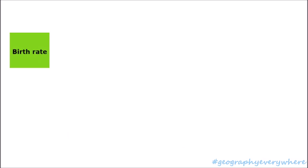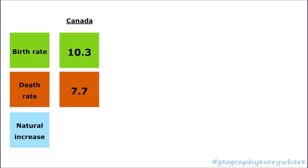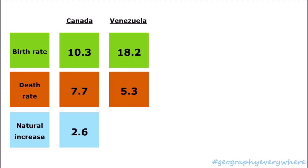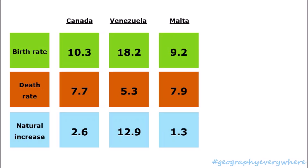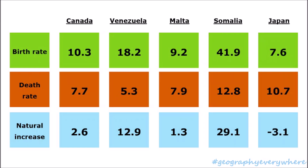Let's look at the natural increase of the countries we mentioned before — the birth rate minus the death rate equals the natural increase. Canada has a natural increase of 2.6. Venezuela has a natural increase of 12.9. Malta, which we just calculated, has 1.3. Somalia's natural increase is 29.1, and Japan's is minus 3.1.